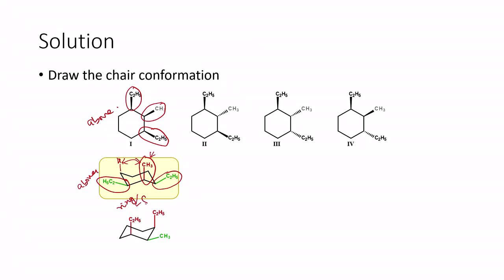When we do the ring flip of compound one, the two equatorial ethyl groups become axial and the axial methyl becomes equatorial. This ring flip leads to two ethyl groups in the axial orientation, which increases instability because there will be more 1,3-diaxial interactions. This compound has more instability with ethyl groups in the axial position.